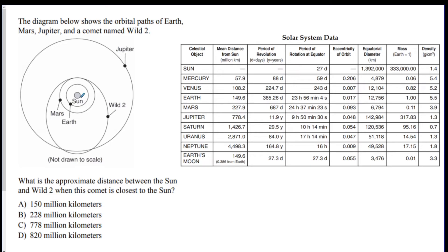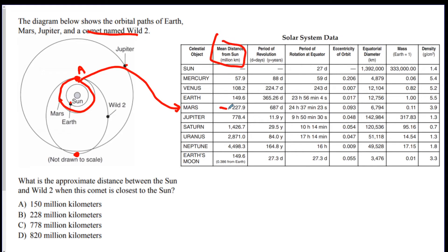This is considered one of the harder questions. The diagram shows the paths of Earth, Mars, Jupiter, and a comet named Wild 2. Wild 2 is not a planet. The question asks the approximate distance between the sun and Wild 2 when it is closest to the sun. Looking at Wild 2's path, the closest point to the sun coincides with the distance that Mars is from the sun. You check the chart — Mars is approximately 227.9 million kilometers from the sun, so B is the best approximate answer.